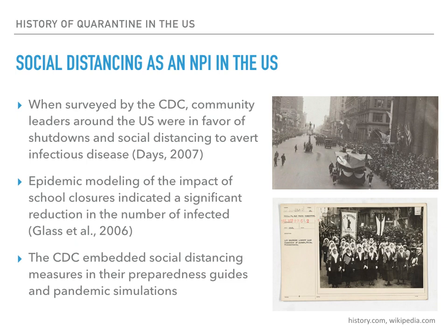The coronavirus pandemic is the first time these community mitigation strategies — such as school closures — have been used on a national scale. These photos are from the 1918 Liberty Loan Parade in Philadelphia, which went on despite the Director of Public Health being warned about possible health ramifications of large gatherings. According to the Smithsonian, within 72 hours after the September 28 parade — which around 200,000 people attended — every bed in Philadelphia's 31 hospitals was filled. By the week ending October 5th, some 2,600 people had died from flu or its complications, rising to more than 4,500 a week later.